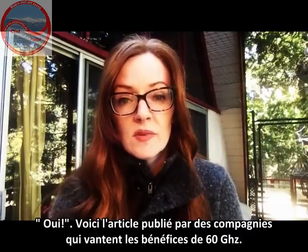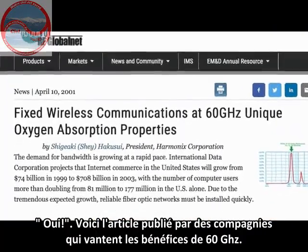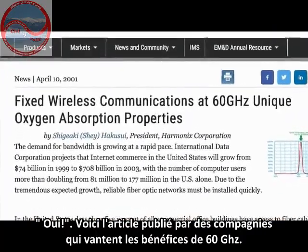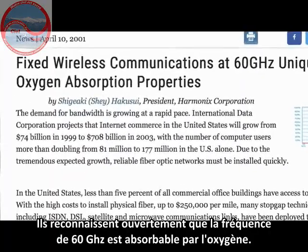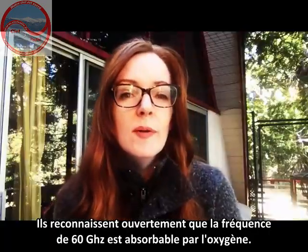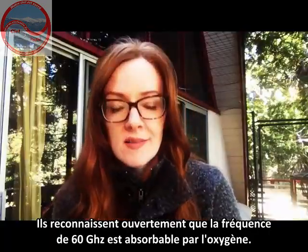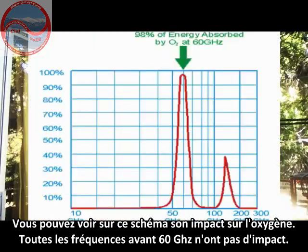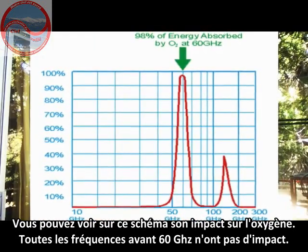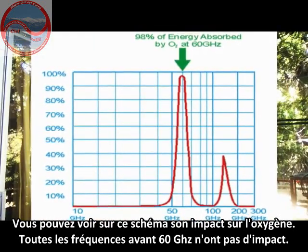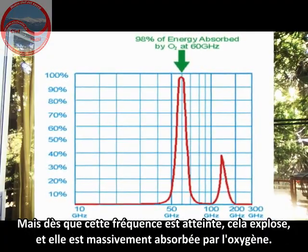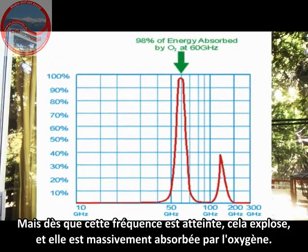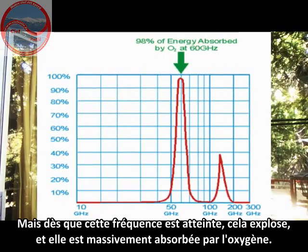Articles released by companies touting the benefits of 60 gigahertz openly admit that 60 gigahertz is absorbable by oxygen. You can see in this graph its impact on oxygen — all the frequencies before 60 GHz are non-impacted, but once it hits that frequency, it spikes and becomes hugely absorbed by oxygen.